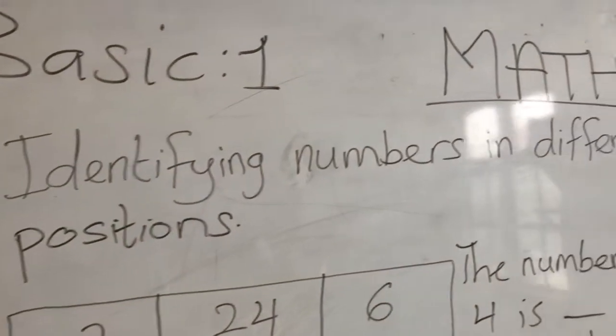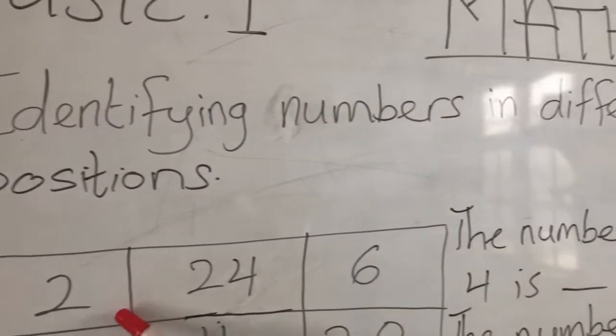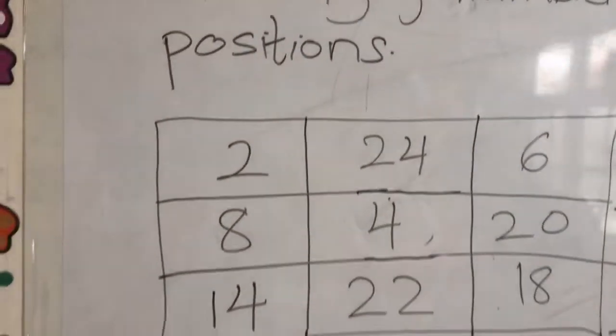Identifying numbers in different positions. When we look at this chart, we have 22, 24, 6, 8, 4, 20, up to 12.